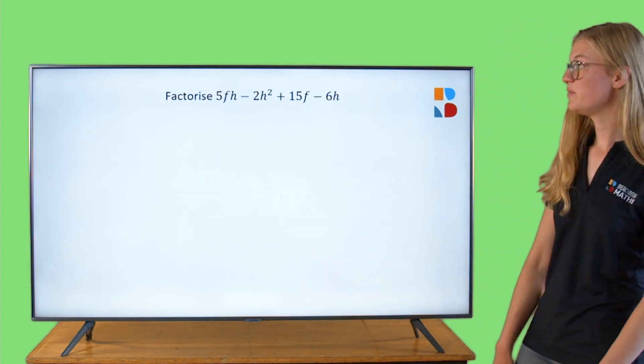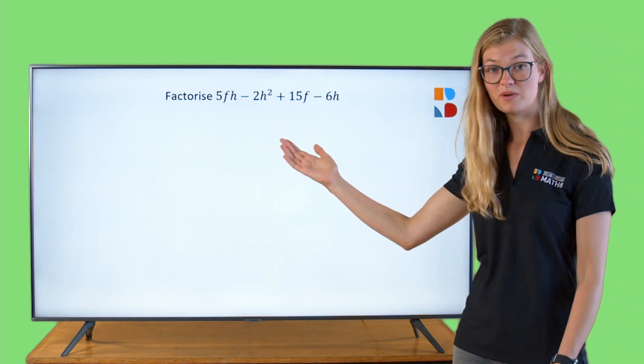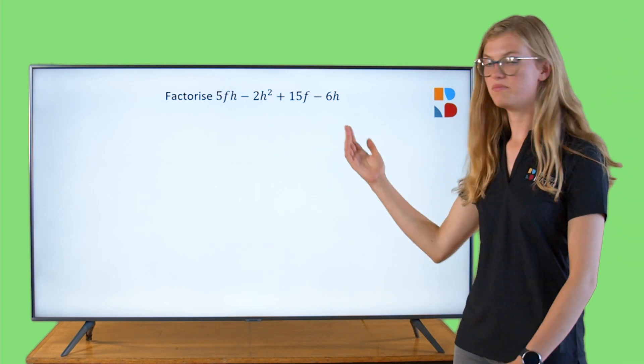Let's have a look at an example. We've got 5FH minus 2H squared plus 15F minus 6H.